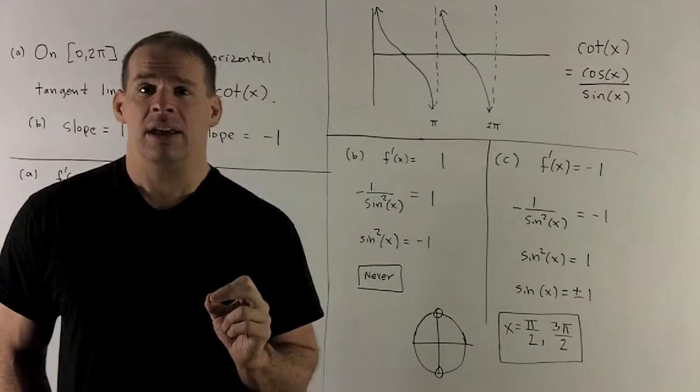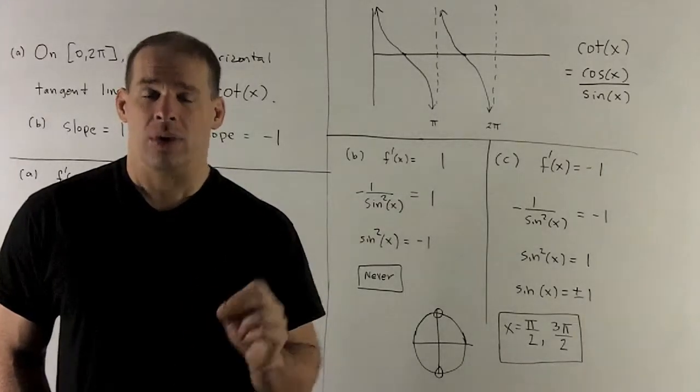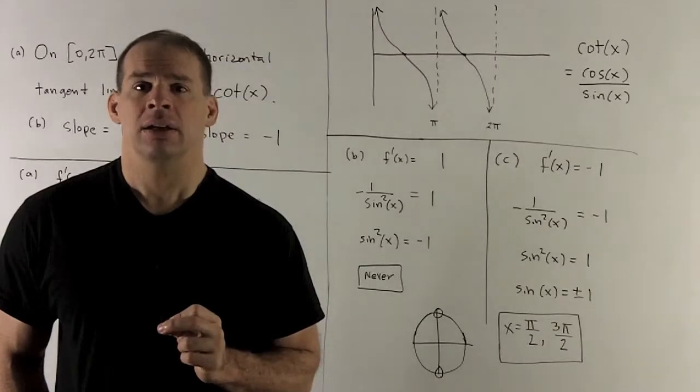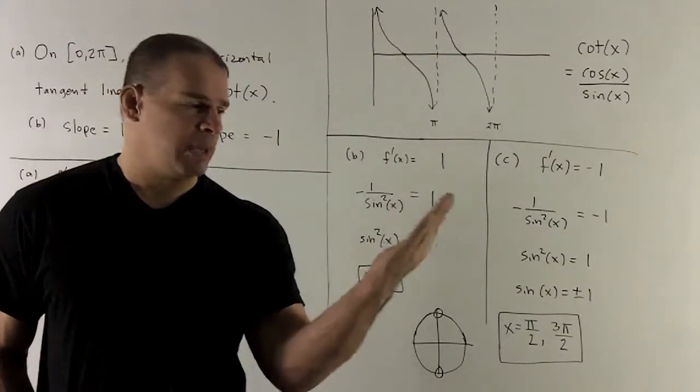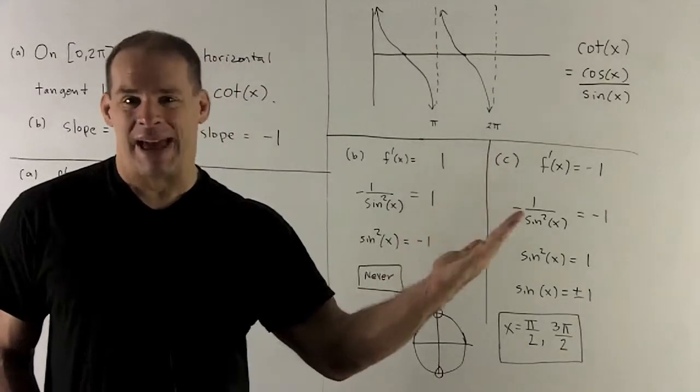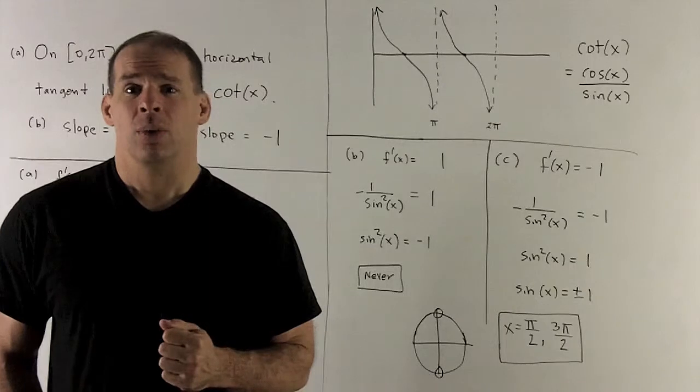If I take the square of anything, I'm going to get either 0 or a positive number. So, again, we're never going to have this happening. Pictorially, if I have a slope equal to 1, that's going to be a line that looks like this. That never happens on our graph. So, our answer checks out with our picture.